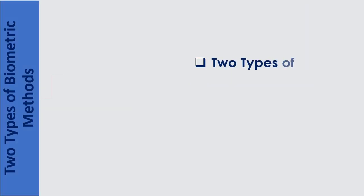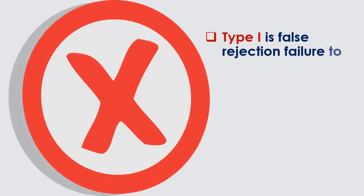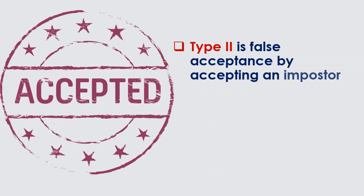Two types of biometric methods are type 1 and type 2. Type 1 is false rejection failure to recognize a legitimate user. Type 2 is false acceptance by accepting an imposter as a legitimate user.